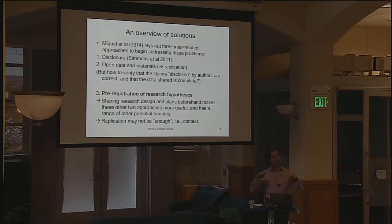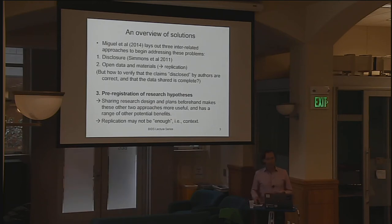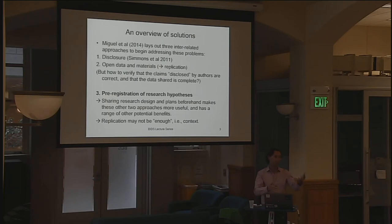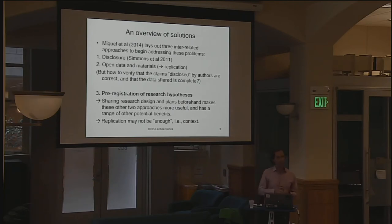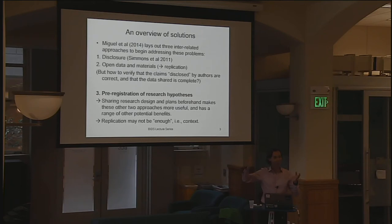The third type of approach is pre-registration of research hypotheses, and that's what I'm going to focus on today. When we think of science, we think of researchers going out with a clear idea of what they're going to test, getting their data, running their experiment, and comparing results to what they planned. In reality, research doesn't proceed this way in many cases. People get their hands on data, mine it, look for correlations and patterns. Maybe they've run 20 different hypotheses, and at the end of the day they only report the one that's statistically significant. That's a big problem — that's part of the reason we think there may be a lot of false positives in research literature.